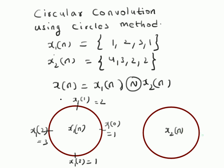Similarly, we represent the second sequence x2(n) on a circle: x2(0) = 4, x2(1) = 3, x2(2) = 2, and x2(3) = 2. These two sequences are represented on two circles and are arranged in anti-clockwise direction.